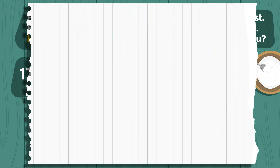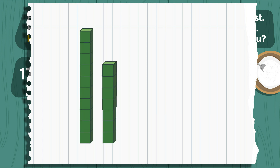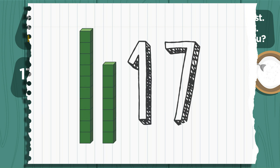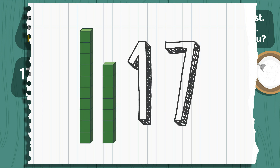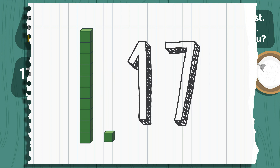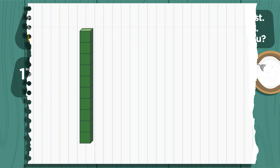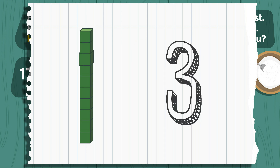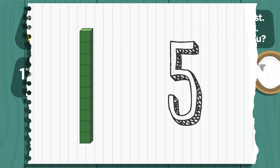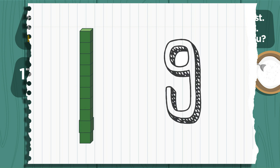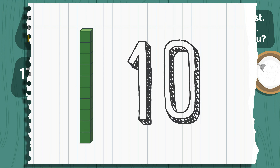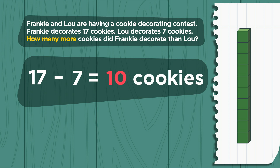Another subtraction strategy is to use counting cubes. Here are 17 cubes. Take away 7: 1, 2, 3, 4, 5, 6, 7. How many are left? 1, 2, 3, 4, 5, 6, 7, 8, 9, 10. The difference is 10. Frankie decorated 10 more cookies than Lou.